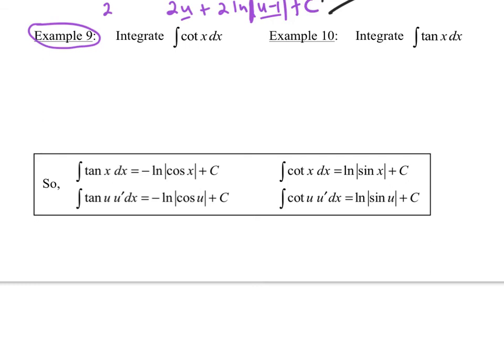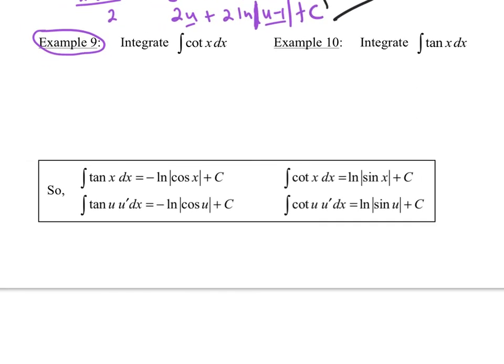For example 9, you can either memorize the formula or memorize how to do this and that works for number 10 as well. So what I have now are these are quotients. So the cotangent comes from cosine over sine.